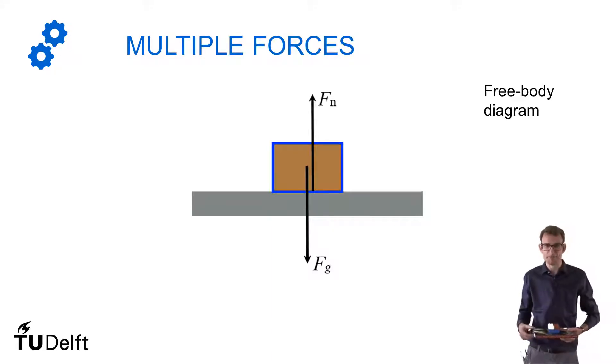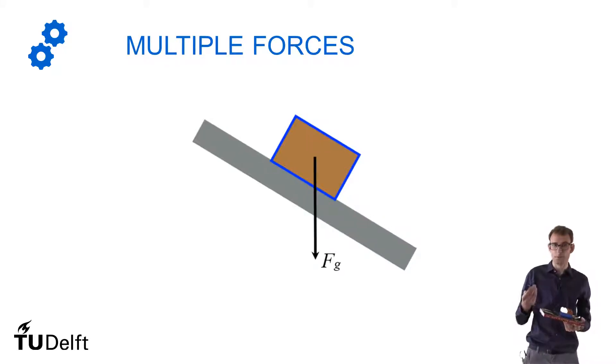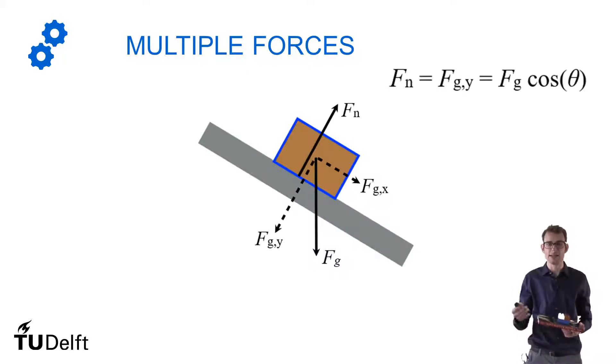Now this is still a rather one dimensional situation. But we can very easily make it multidimensional by simply tilting the book. Now the force of gravity is still pointing down. But the normal force is no longer pointing up because perpendicular to the surface is now under some angle. So if we want to know how big the normal force is, that's only the component of gravity that's pointing towards the surface. So we have to decompose the gravitational force and find the component that's perpendicular to the surface. And that will give a reaction force, which is the normal force.